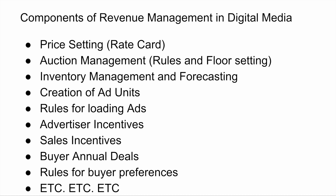So let's summarize. When we think about the components of revenue management in digital media, there are a host of different components. It can involve things as straightforward as price setting — setting up your rate card and changing the prices on it. If it's programmatic buying, you need to think about auction management: the rules and setting the floor prices within the auction. It involves inventory management and inventory forecasting, potentially the creation of new ad units on your page. It also involves the rules around ad loading — sometimes referred to as ad rotation — where an ad loads on the page and after 20, 30, or 40 seconds may get swapped out for a different ad.